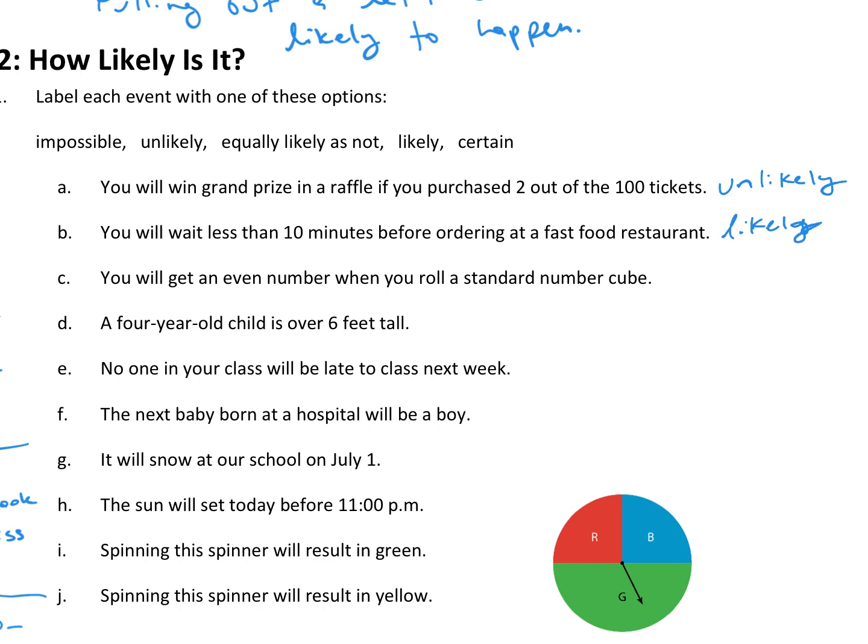You will get an even number when you roll a standard number cube. So, on a standard number cube are the numbers 1, 2, 3, 4, 5, 6, and of those numbers, 2, 4, and 6 are even. So, in this case, it is equally likely as not, because you have three chances of rolling an even and three chances of rolling an odd.